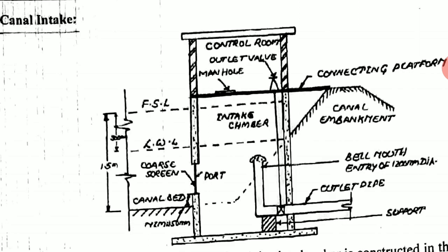This figure shows the details of the canal intake. An intake chamber is constructed in the canal section, which results in the reduction of the waterway, which increases the velocity of flow. It therefore becomes necessary to provide pitching on the downstream and upstream portion of the canal intake.